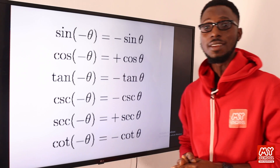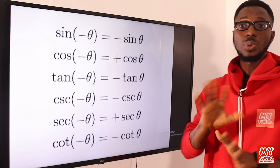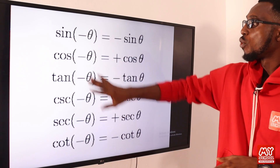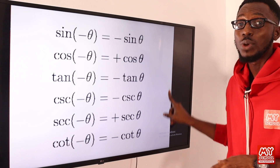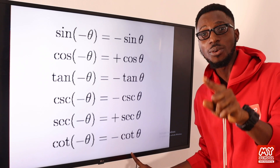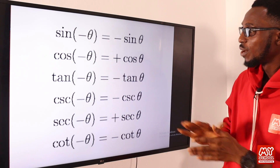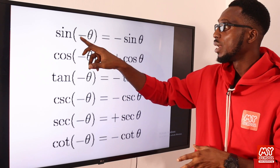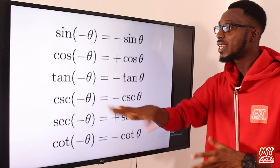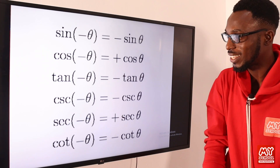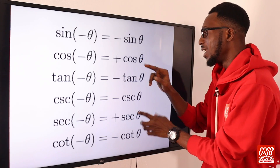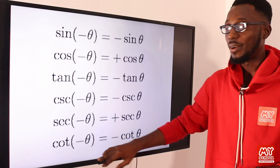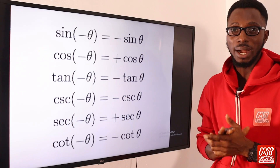We also have the negative angle. When moving through regular quadrants, we move anti-clockwise. When dealing with negative angles, we move in the clockwise direction — starting from 360 degrees. In the fourth quadrant at 360 degrees, only cosine is positive. So for negative angles, sine theta will come out as negative. The only things that come out positive are cosine and its inverse, secant. This is what the negative angle concept is about.